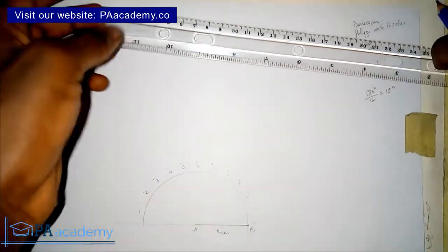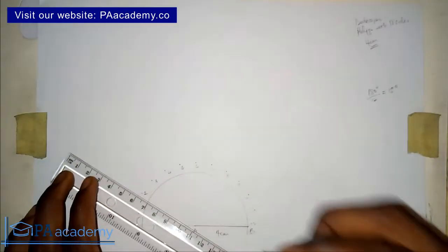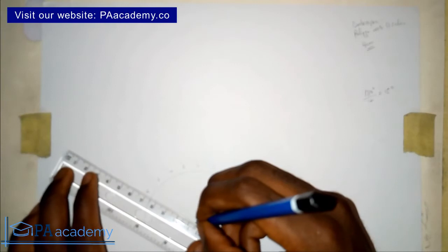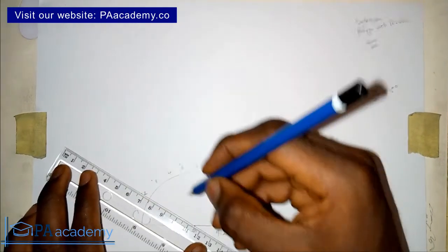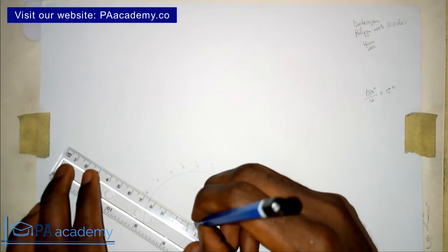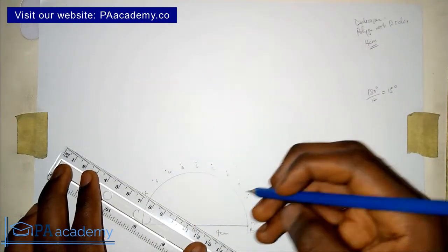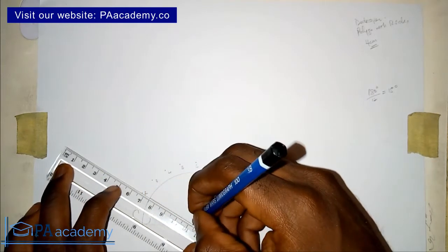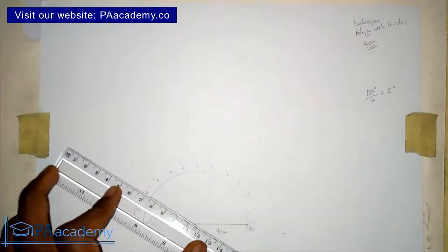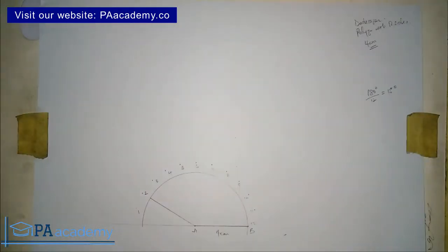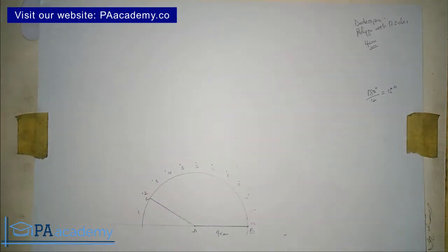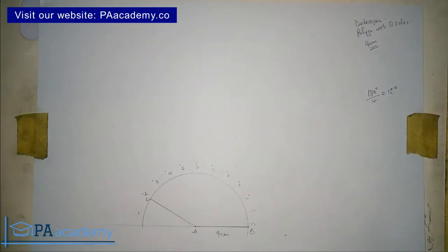Next, bring your ruler and join from point A toward point 2 on the semicircle. You're not joining directly to point 2 — just make sure you are aligned with it, and draw a line from the semicircle back to point A. Let's call that intersection point C. Line AC now represents one other side of the dodecagon we are drawing.